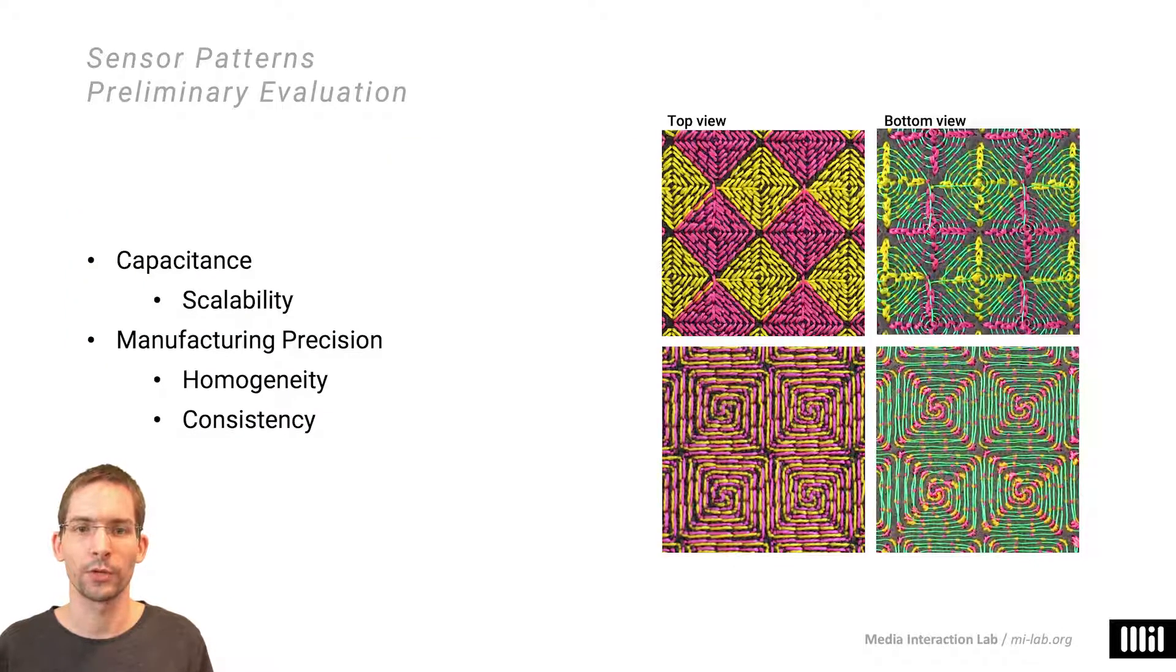For selecting the two most promising candidates, our two main criteria were sensor capacitance and manufacturing accuracy. Small scale sensor matrices require patterns that still feature adequately high capacitance at small sizes, so we can operate them with commodity sensing hardware. The manufacturing accuracy on the other hand controls the homogeneity and consistency of individual sensor cells within a grid.